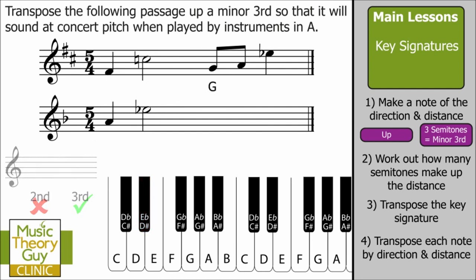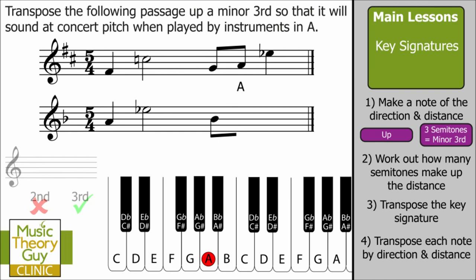Our next note is G. Here it is on the keyboard; we go up three semitones: one, two, three. Again, we need to work out whether it's B flat or A sharp — it's a second to A sharp but a third to B flat, so our answer is B flat. Write that down — and be aware there's no need to write in the flat, as it's covered by our transposed key signature. Our next note is A; going up three semitones lands us on C, so our transposed note is C.